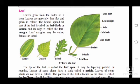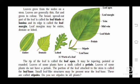Leaves grow from the nodes on the stem. Leaves are generally thin, flat, and green in color. The broad, spread out part of the leaf is called the leaf blade or lamina. You can see in figure 2.7, the lamina is the broad, flat bed and its edge is called the leaf margin. Leaf margins may be entire, dented, or lobed. The tip of the leaf is called the leaf apex. It may be tapering, pointed, or rounded.